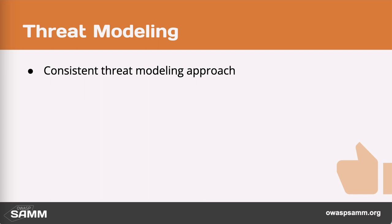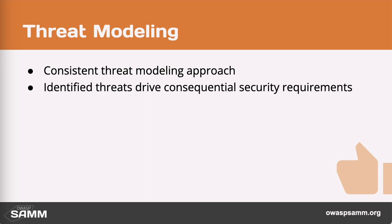There are a lot of different ways to do threat modeling — there is no one right way. There is the way that works for your organization, so you have to use consistent language and consistent representations. Security requirements that arise from threat modeling are consequential requirements, identified as a consequence of wanting the software to do something. Once identified, they are just requirements, so they just need to be implemented. Prioritize them like the others, think about dependencies, and so on.